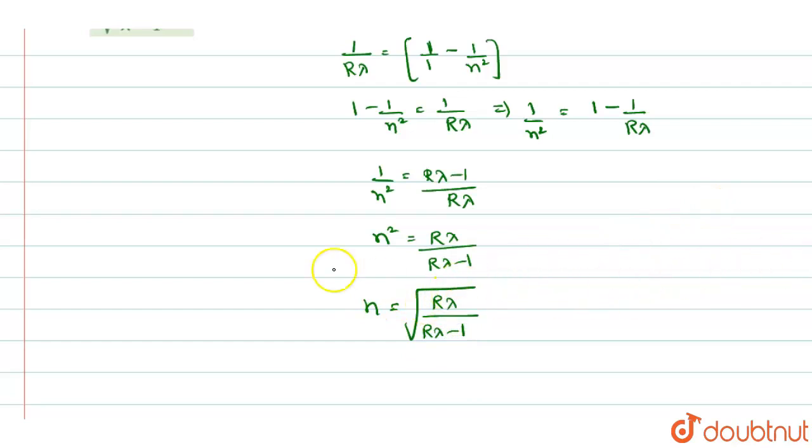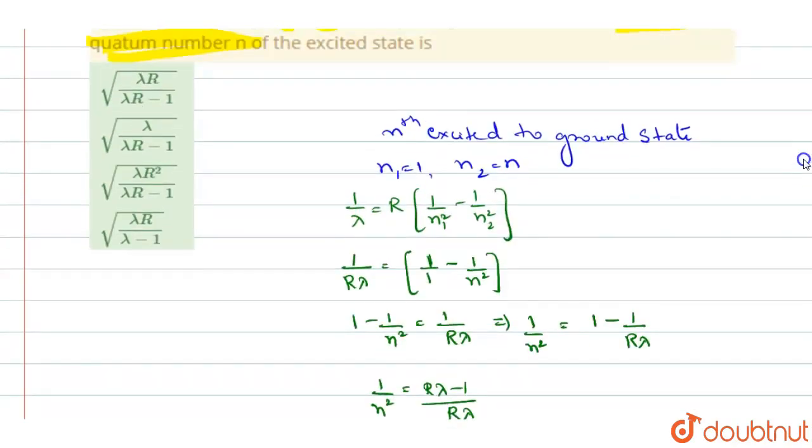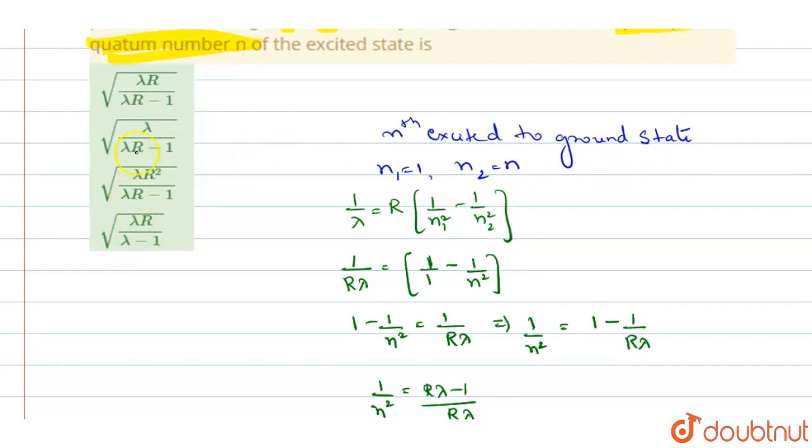So, you can say it as the N, the principal quantum number is equal to R lambda by R lambda minus 1. So, you can say that R lambda by R lambda minus 1 option A will be the right answer.